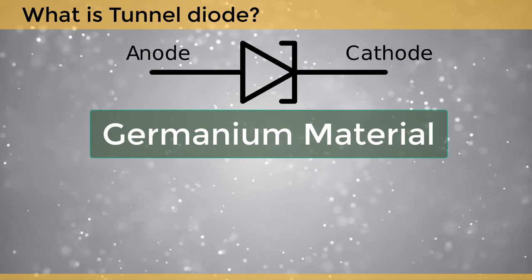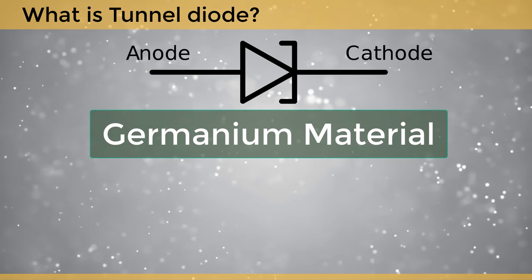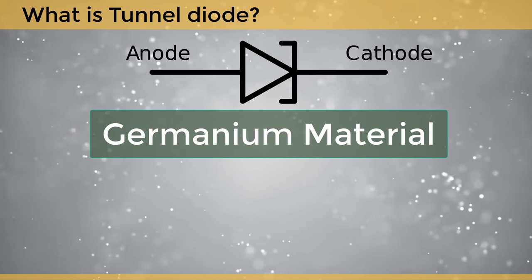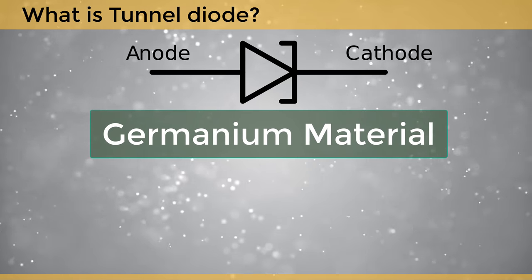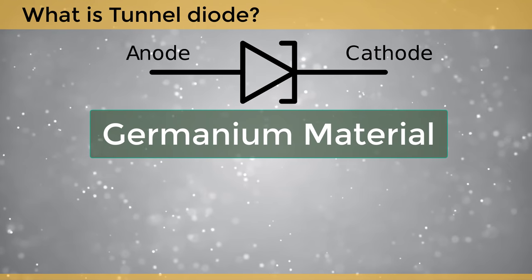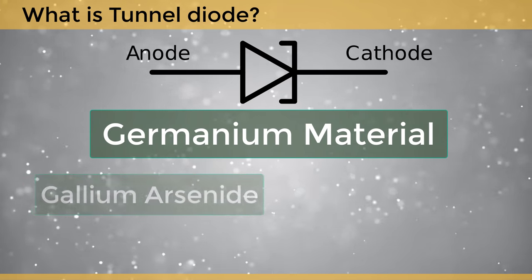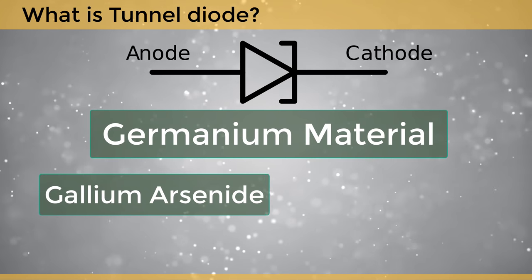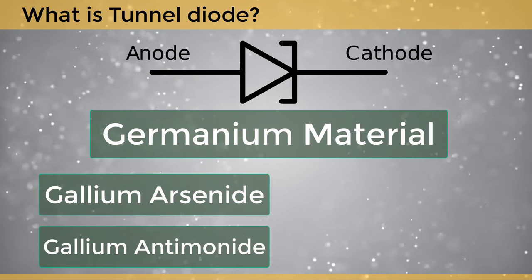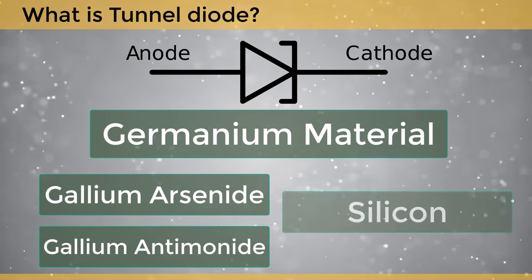Germanium is the material commonly used to make tunnel diodes. They are also made from other types of materials such as gallium arsenide, gallium antimonide, and silicon.